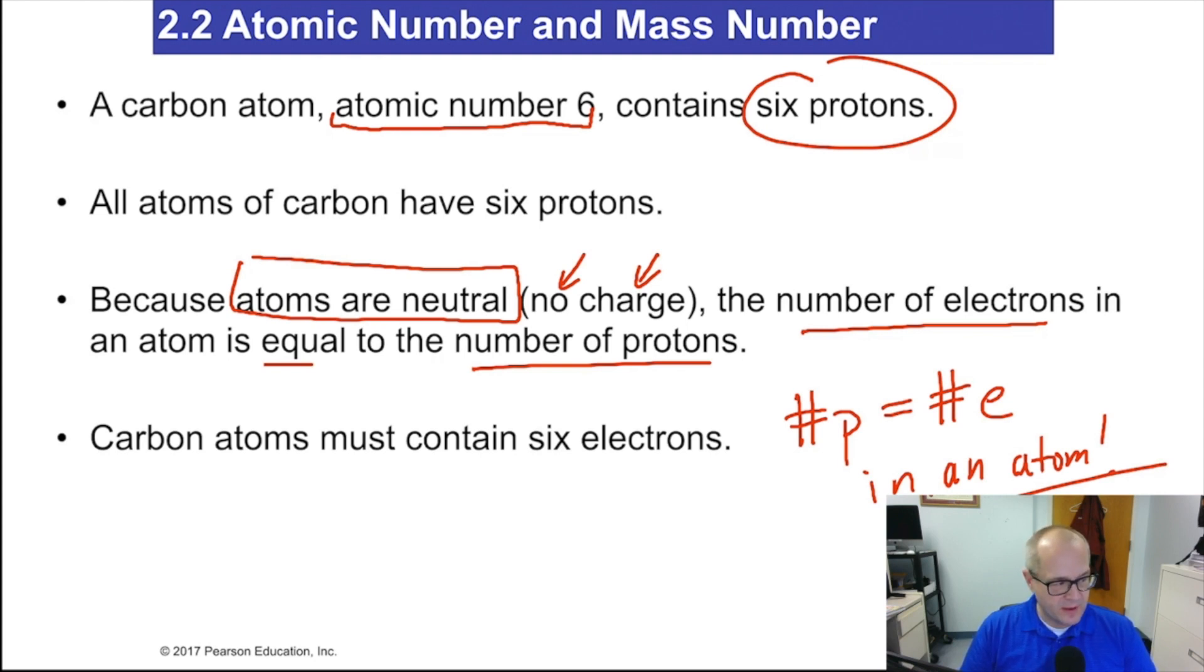Now, that's pretty cool. So carbon atoms contain 6 electrons and 6 protons. Because remember, atoms are neutral. The protons equal electrons.